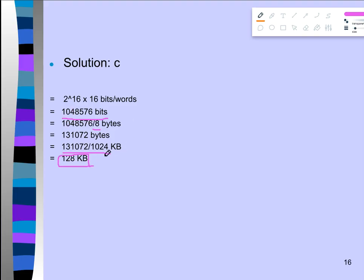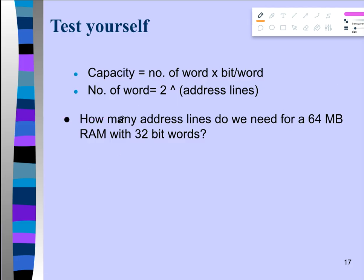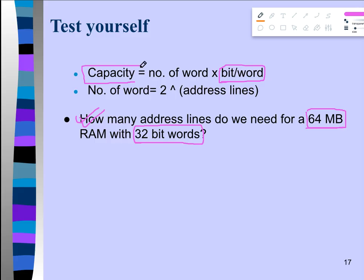Next question: how many address lines do we need for a 64 megabyte RAM with 32 bits per word? From the question, 32 bits per word is explicitly available, and 64 megabyte RAM indicates the capacity. The question asks for the number of address lines, but address lines appear in the second formula — so we first need to find the number of words using the first formula.